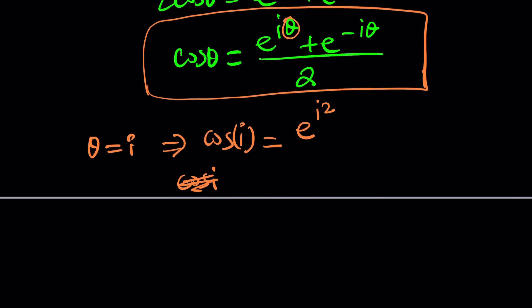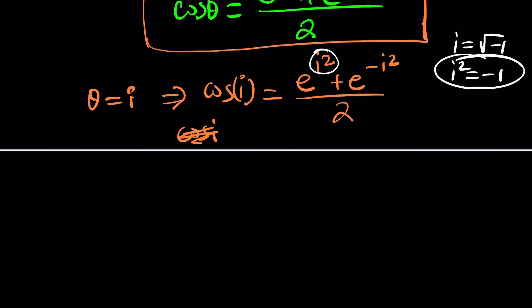And then this will become e to the power negative i² divided by 2. I do want to write the answer right away because then I will be skipping some steps. But remember what I told you. i is the square root of negative 1, which also means i² is negative 1. Beautiful.